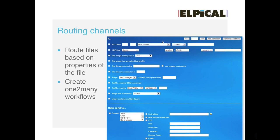The routing channels allow you to route files to one processing channel or another based on specific characteristics — whether that is physical size, metadata, or color space. This allows you to create a one-to-many workflow where all files come into one big basket and, based on that metadata and technical data, are routed to the correct channel for optimal processing.